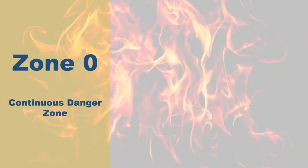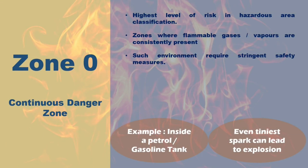Zone 0 - Continuous Danger Zone. Zone 0 is the highest level of risk in hazardous area classification. Think of it like being inside a petrol or gasoline tank. In this zone, there's a continuous presence of explosive gasoline vapors — even the tiniest spark can lead to a massive explosion. Examples include the interior of gas storage tanks or areas with a constant gas leak. Such environments require stringent safety measures, including specialized equipment designed to minimize the risk of ignition.